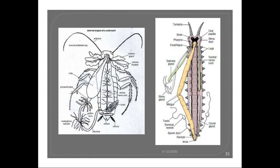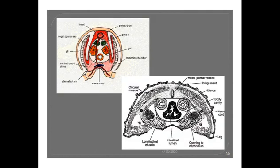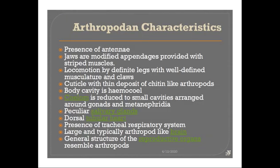The dorsal tubular heart is another shared character. In the cross-section shown, you can see the heart on the dorsal side of the body in the upper figure. Similarly, in the lower figure — the cross-section of Peripatus — you can see the same kind of dorsal tubular heart present. This is another feature relating Peripatus with Arthropoda.